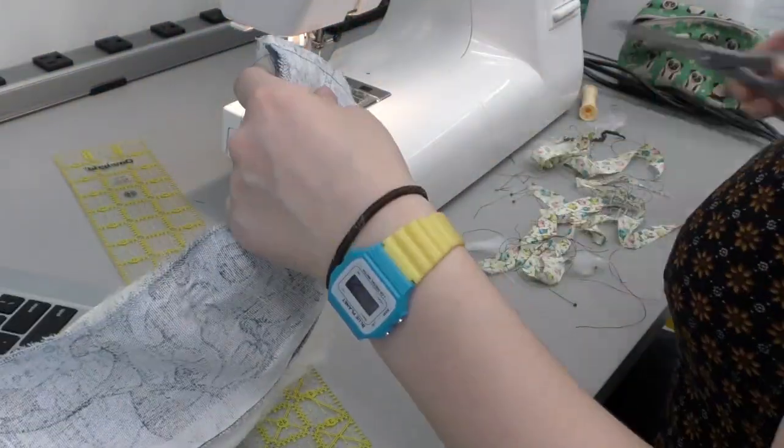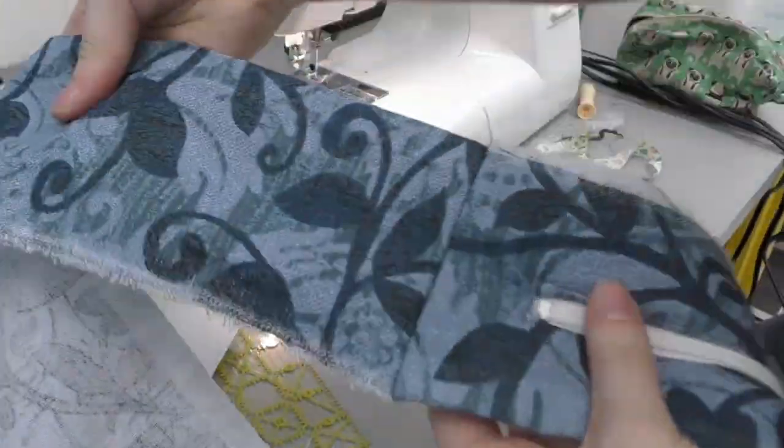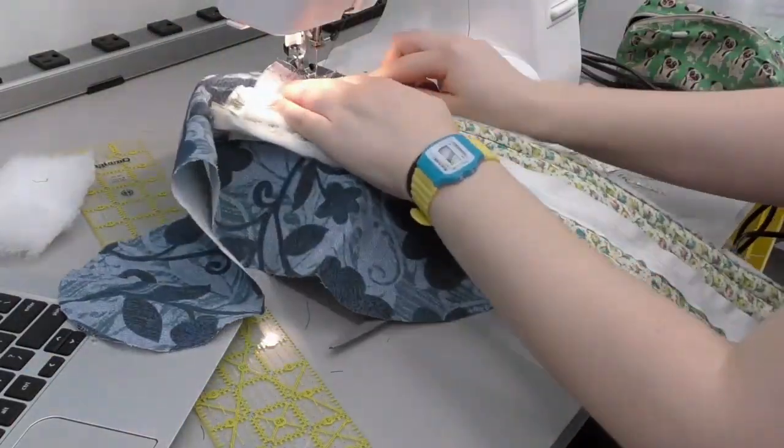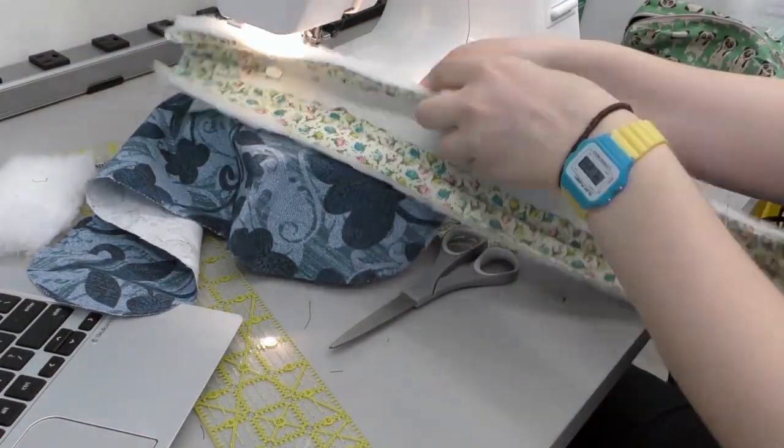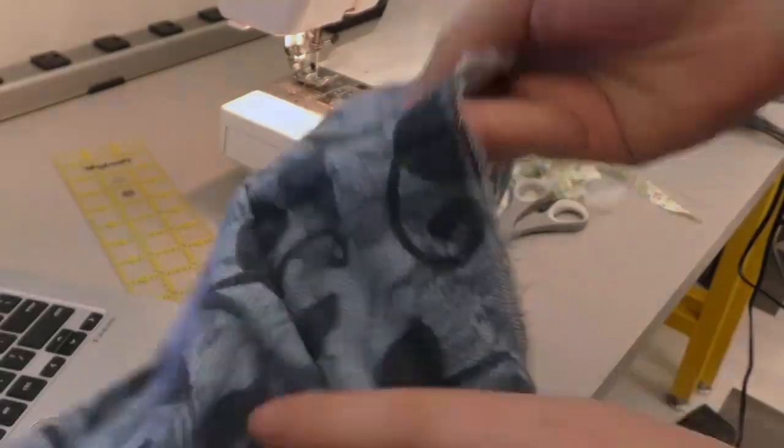Now sew the end of your short side piece to the end of your long side piece. It will be a little bit awkward because the lining is also attached to the zipper. Sew the long piece all the way around the circumference of the body and then attach it to the other side of the short piece on the other side.